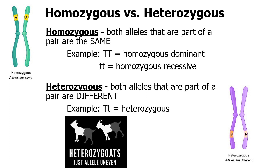A few more terms to introduce: homozygous and heterozygous. Homozygous means that in your pair of alleles, both are the same — two capital letters would be homozygous dominant, two lowercase letters would be homozygous recessive. Or you could have one of each, a big and a small — two different ones — and we call that heterozygous. The prefix homo means same, and hetero means different.